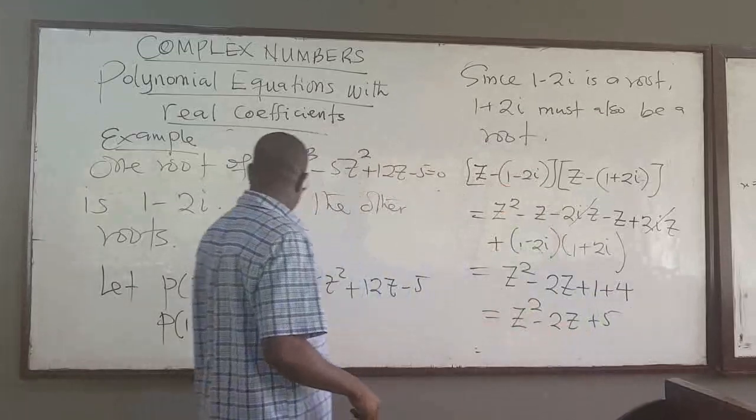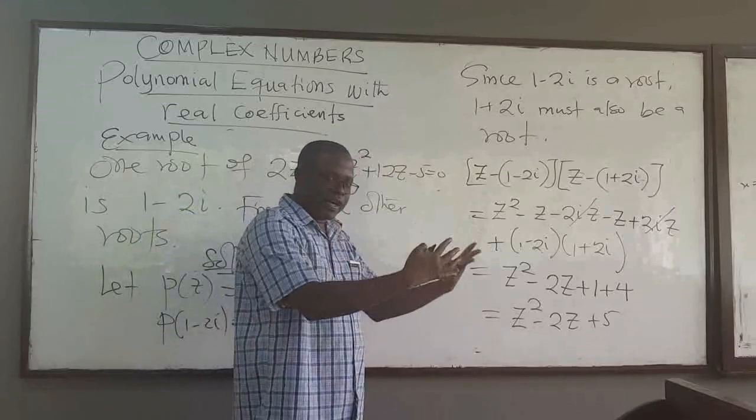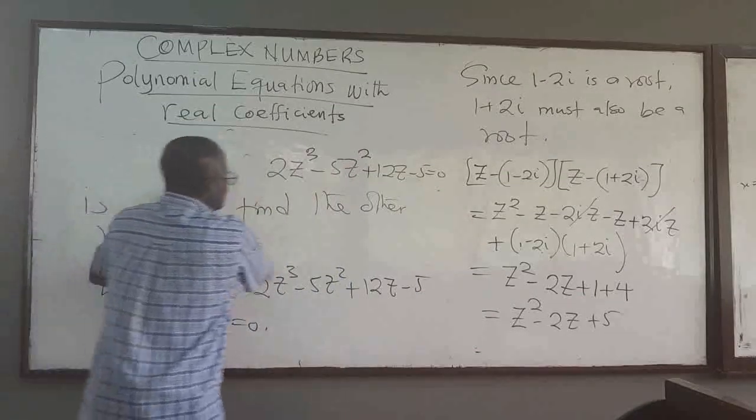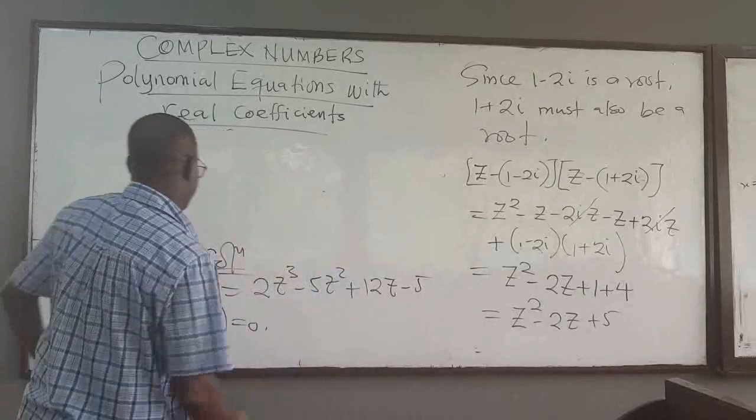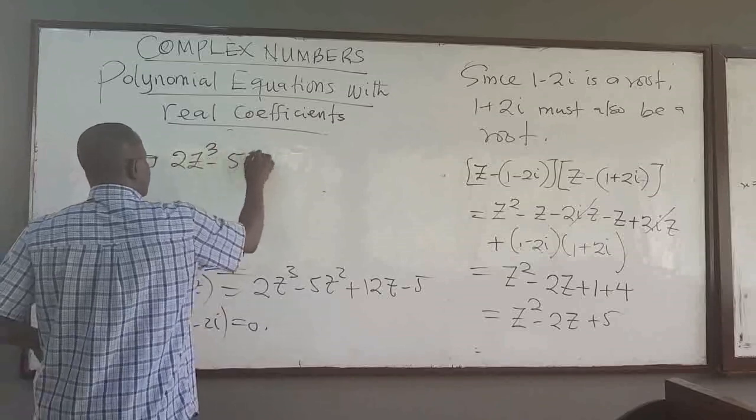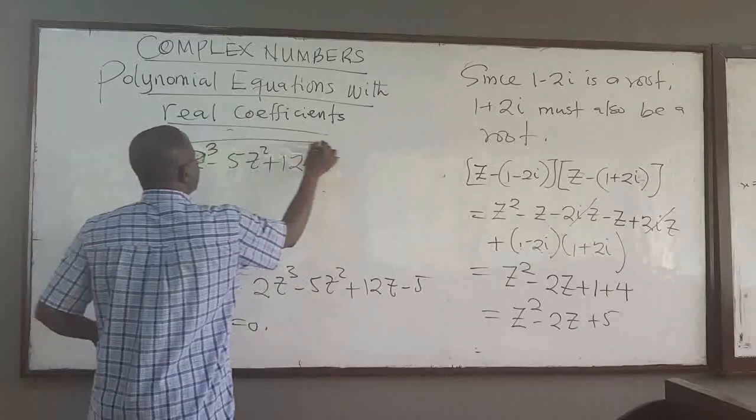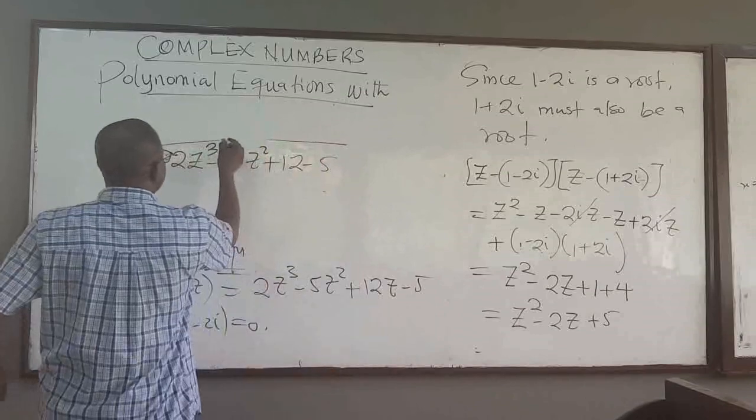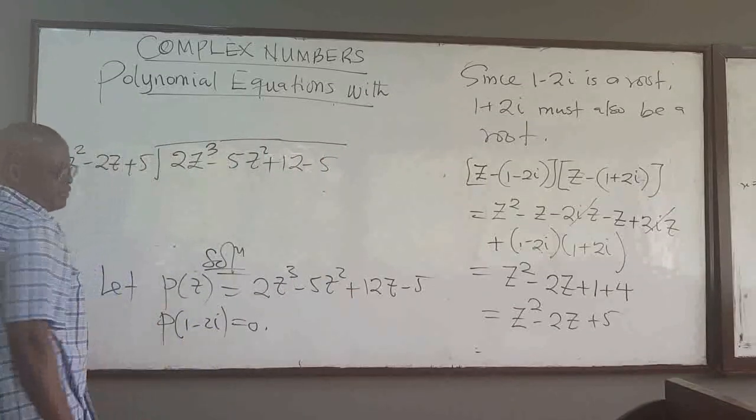So I can take this polynomial that we know, I divide by this, and that will give me the other factor from which I can get the other roots. So to get the last roots of the polynomial, I'm going to do a long division. I'll take 2z to the power 3 minus 5z squared plus 4z minus 5. I'm going to divide by z squared minus 2z plus 5.